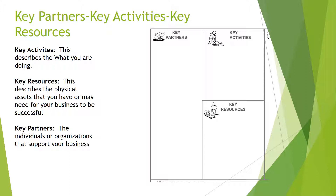Moving over to the left side of the canvas, we have key partners, key activities, and key resources. This starts to describe the what of the business — it's kind of the backbone of what makes delivering the value proposition possible. Key activities are the specific things you're doing in the business. If you're a kale farmer, growing kale on 10 acres of land is a key activity, and going to the farmers market once a week is a key activity.